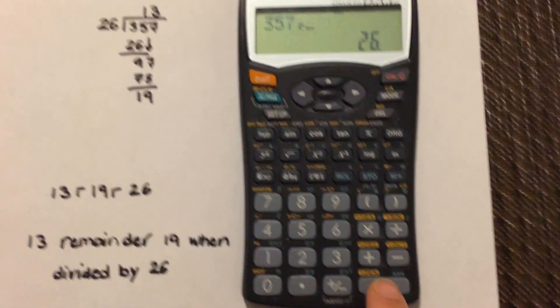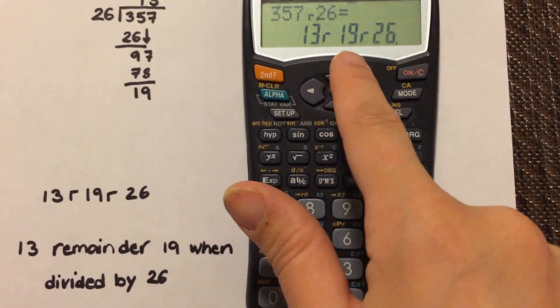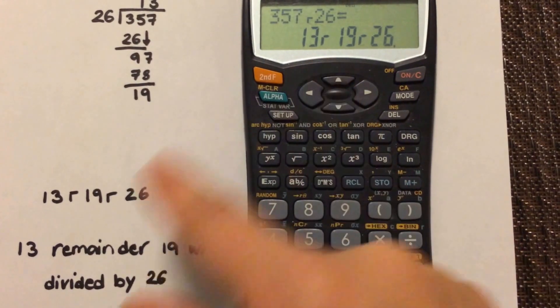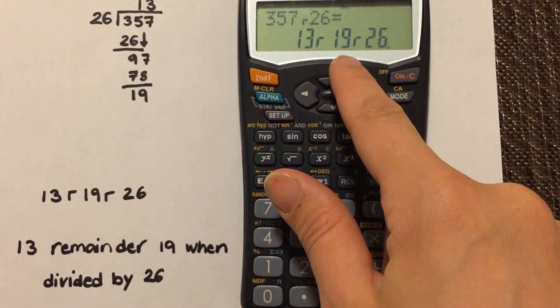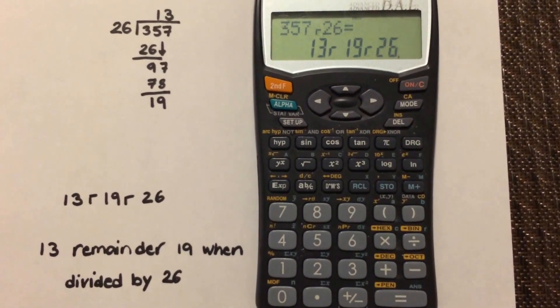and hit equals. You'll see right there, it shows you 13 over 19 over 26, which means the answer is 13 with the remainder of 19 when you divided it by 26.